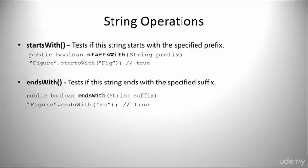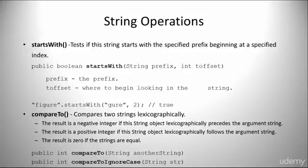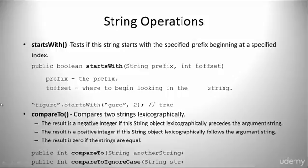startsWith tests if this string starts with the specified prefix. endsWith tests if this string ends with the specified suffix. There is also a variant of startsWith that tests if this string starts with the specified prefix beginning at a specified index. compareTo compares two strings lexicographically — the result is negative if this string precedes the argument string, positive if it follows, and zero if the strings are equal.